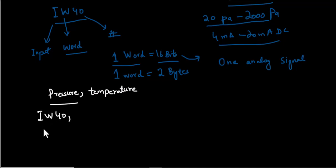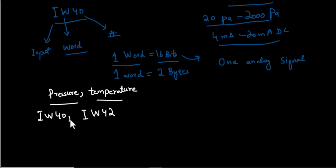Since one word equals two bytes, the address of the analog input channel to which the temperature sensor has been interfaced will be IW 42 — it will not be IW 41, because one word has two bytes and the addressing of the PLC is done in bytes.